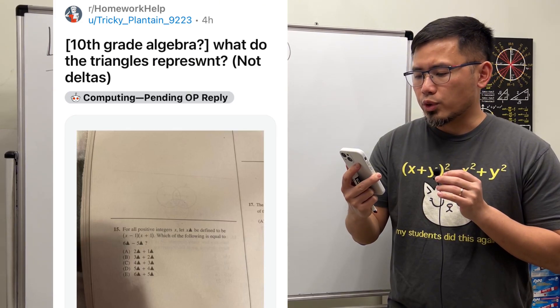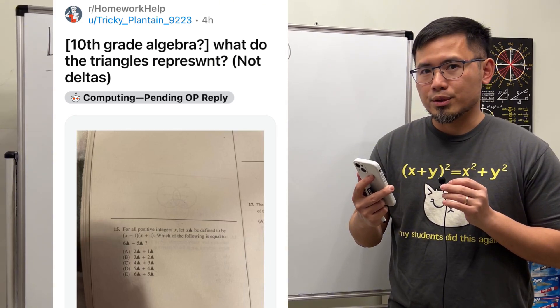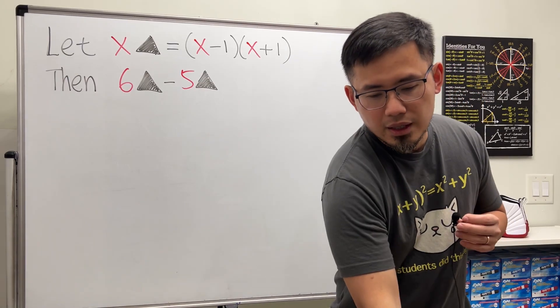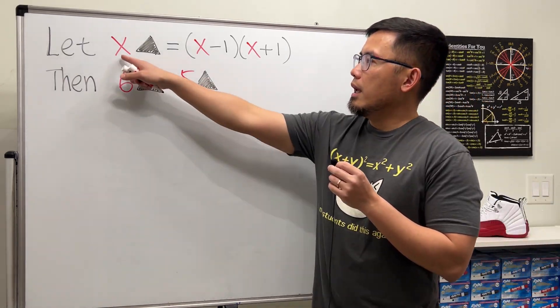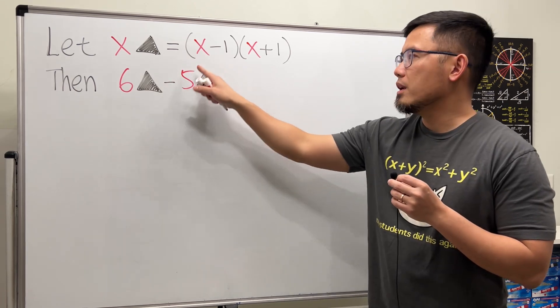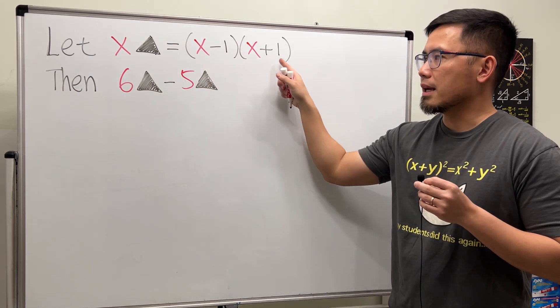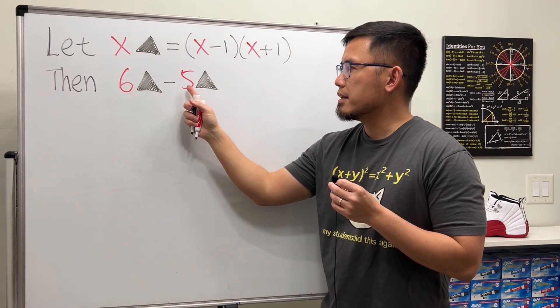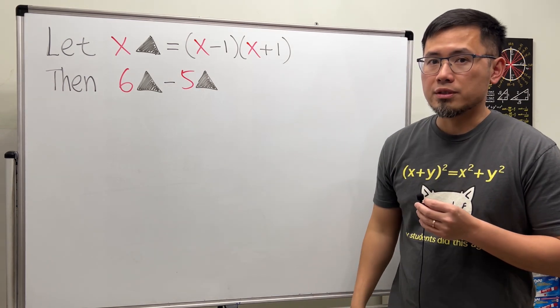This is a typical SAT-type question. We have x triangle defined to be (x-1) times (x+1), and we're going to find out what's 6 triangle minus 5 triangle.